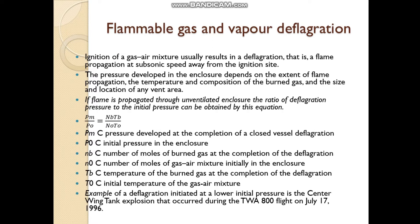The pressure which develops in the enclosure will depend on the flame propagation extent, temperature, the burnt gases and their composition, and the vent area — its size and location. For a closed vessel deflagration, the formula is: PM / PO = (NB / NO) × (TB / TO), where PO is initial pressure in the enclosure, NB is number of moles of burnt gas at completion of deflagration, NO is number of moles of gas-air mixture in the enclosure, TB is temperature of burnt gas at completion of deflagration, and TO is initial temperature of the gas-air mixture.